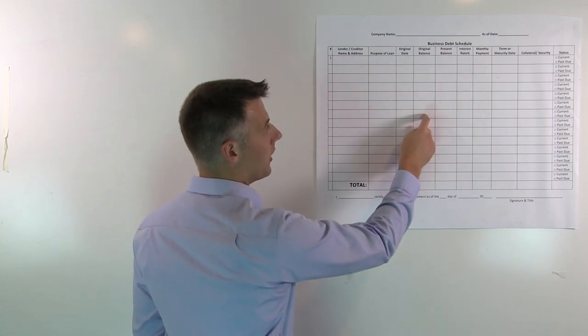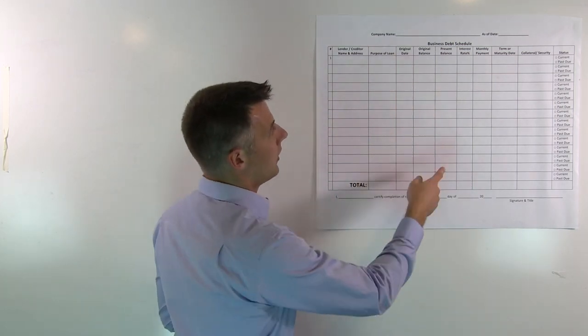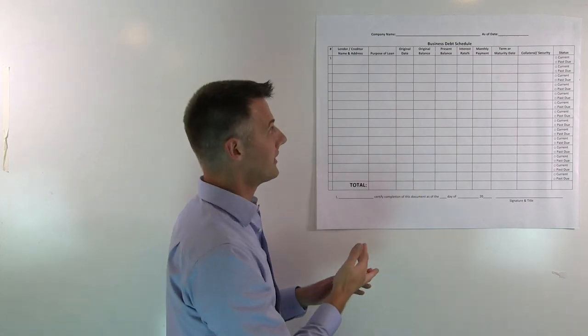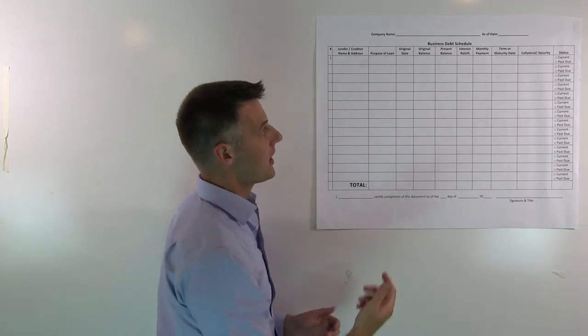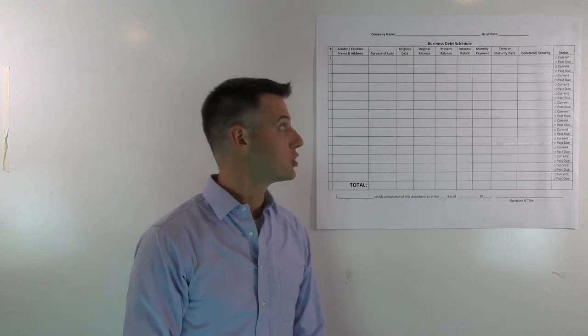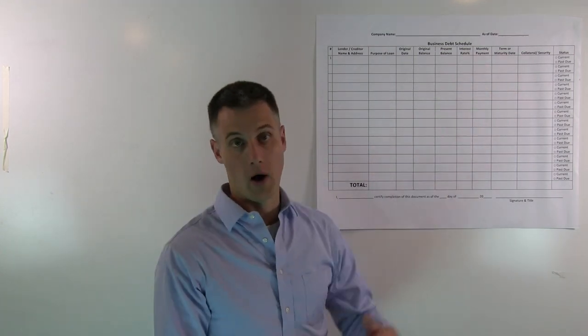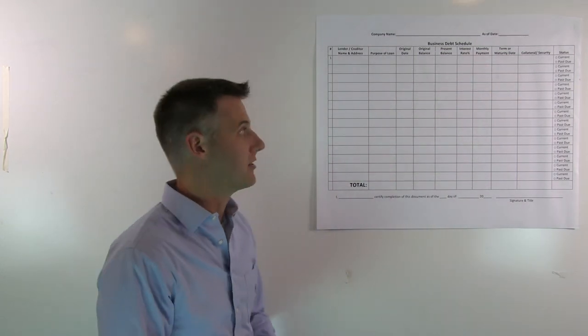When you got it, how much the original loan was, how much you currently owe on it, your interest rate, your monthly payment, when it matures or how long is it, five-year term, ten-year term.